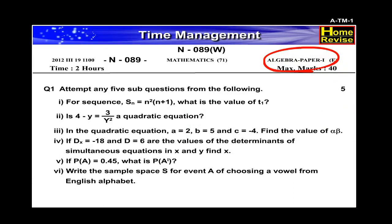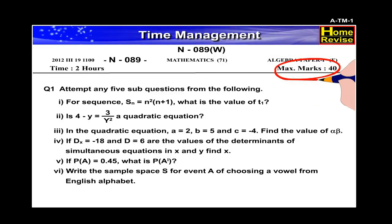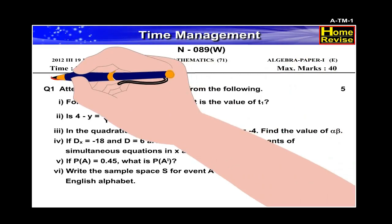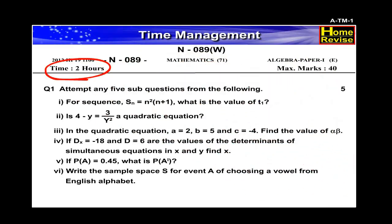Algebra. Now let us have a look over time management for algebra paper. As I told you earlier, the written paper is of 40 marks and the total time allotted for paper is 2 hours, which means 120 minutes.